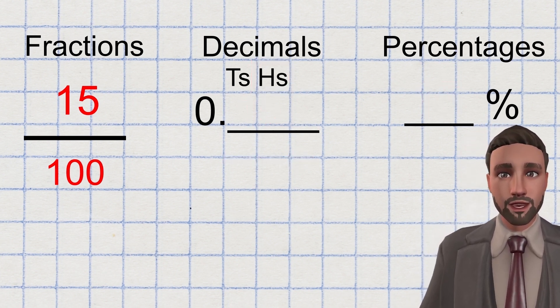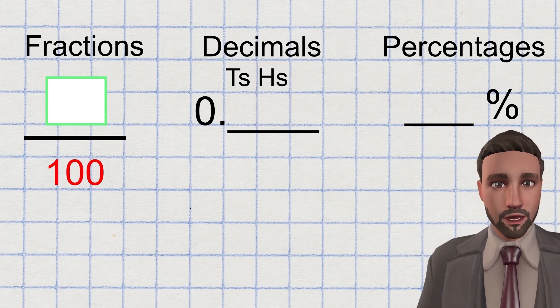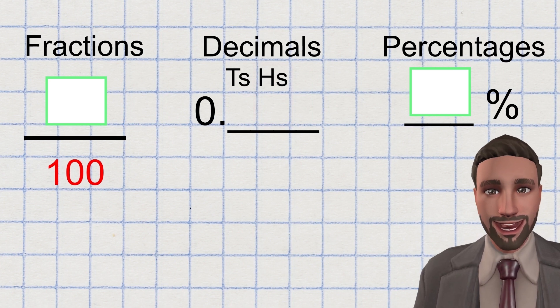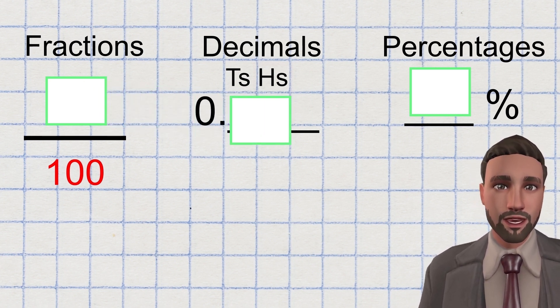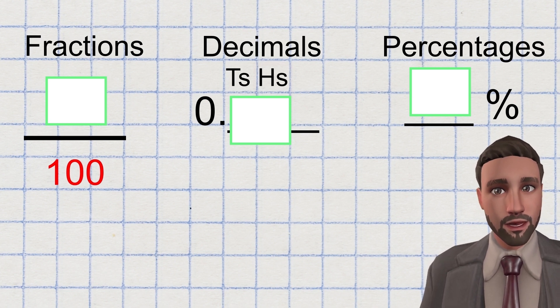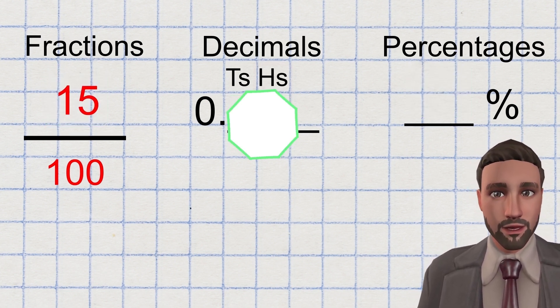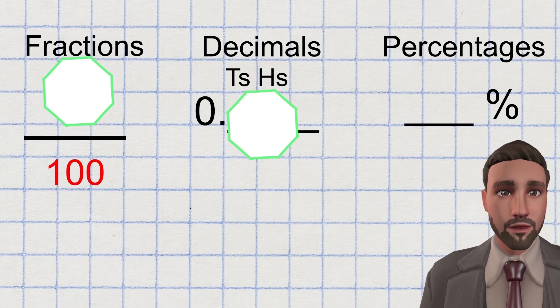So as a quick summary, whatever numerator we have on top of a fraction that is split into 100 parts is the same amount we have as a percentage. And the same digits that fill the first two place value columns after the decimal place where we write it as a decimal. Which also means the first two decimal places after the decimal can be wrote as the numerator out of 100 if you wanted to write it as a fraction or wrote it as a percentage.